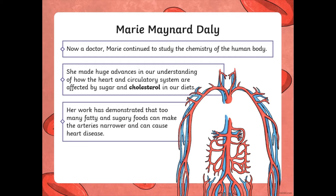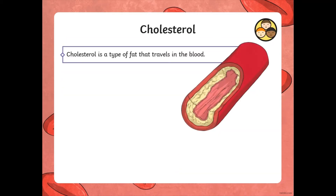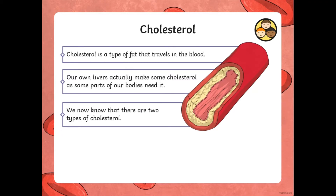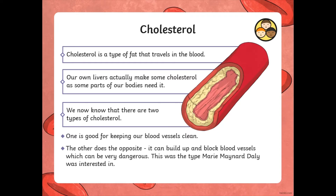Her work demonstrated that too many fatty and sugary foods can make our arteries narrower, and that can cause problems for our heart — it can cause heart disease. Now, cholesterol is a type of fat that travels in the blood. Our own livers actually make some cholesterol, as some parts of our bodies do need it to function. There are two types of cholesterol: one is good and keeps our blood vessels clean, and the other can build up and block blood vessels, which can be very, very dangerous.